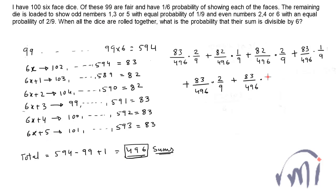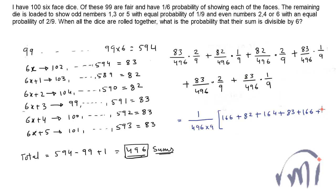Now we solve it. Taking 1/(496×9) as a common factor, the bracket contains: 83×2 = 166, plus 82×1 = 82, plus 82×2 = 164, plus 83×1 = 83, plus 83×2 = 166, plus 83×1 = 83. This sums to 744. So the expression becomes 744/(496×9). Simplifying: 744/4464 = 1/6. The probability of the sum being divisible by 6 is 1/6.